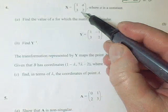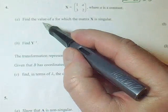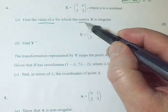Question four. We've got a matrix X with an A in it we don't know, and we need to find the value for A for which that matrix is singular.